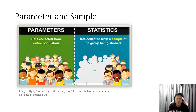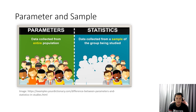Right now, we have the differentiation of parameter and a sample. Parameter is the data collected from the entire population, whereas in statistic, it is the data collected from a sample of the group being studied. For example, the whole Norseunyan student body is considered as a parameter because it involves the whole Norseunyan students. And on the statistics side, we have a sample which considers the students residing only in Dumaguete City.